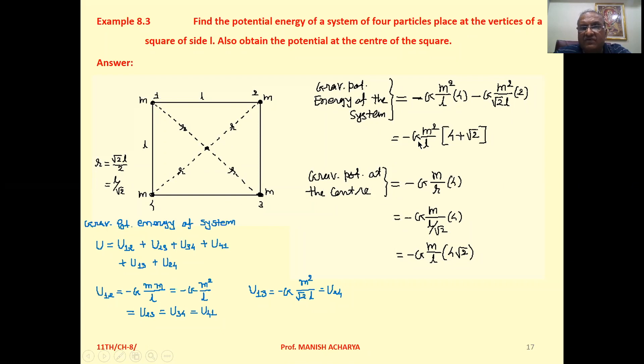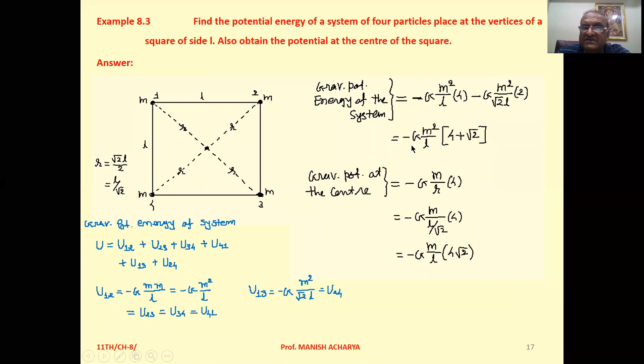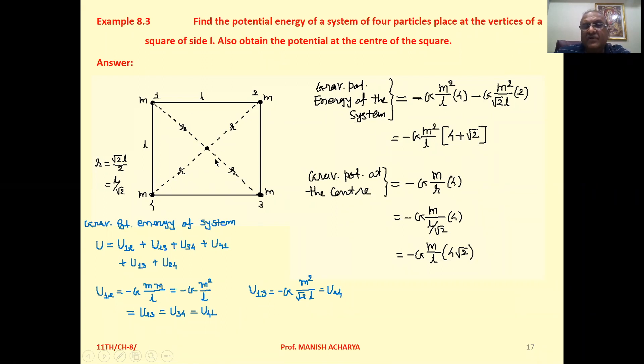Take G m squared by L common, so minus G m squared by L into bracket 4 plus root 2. This is the gravitational potential energy of the entire system.